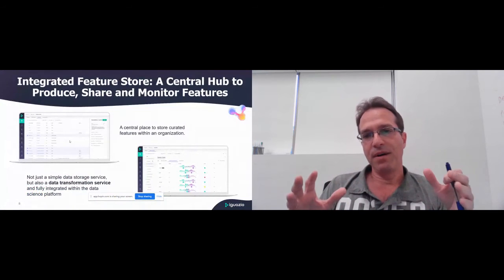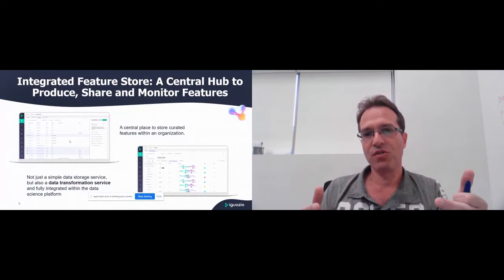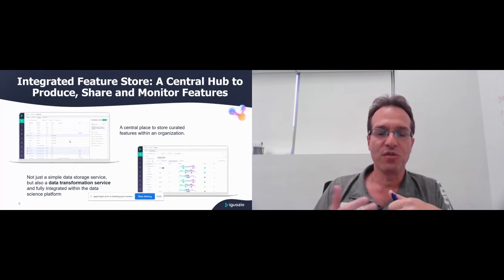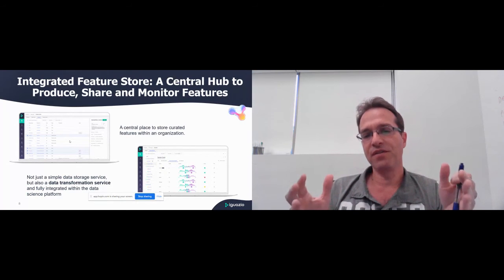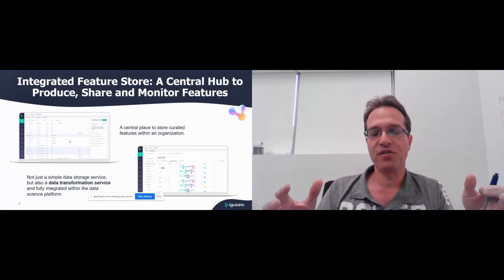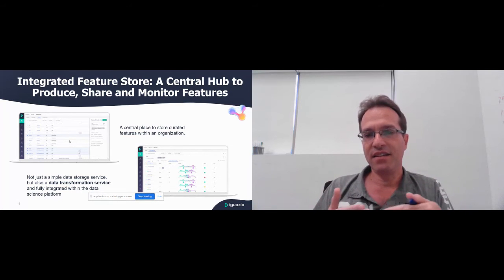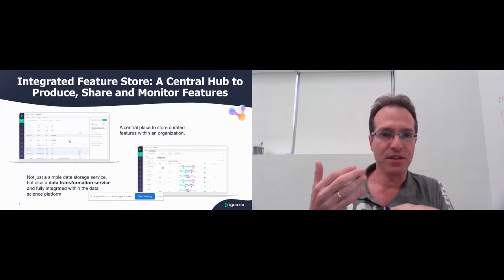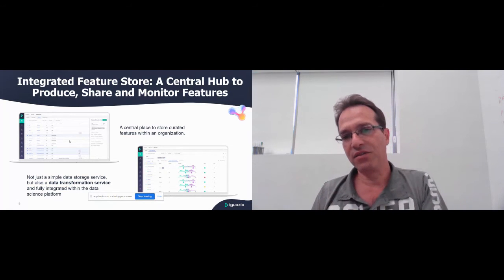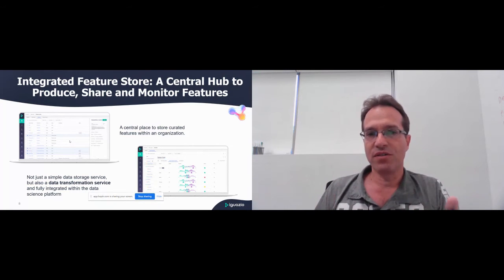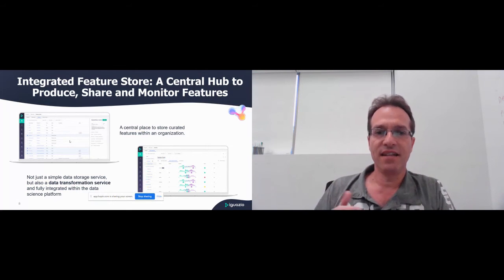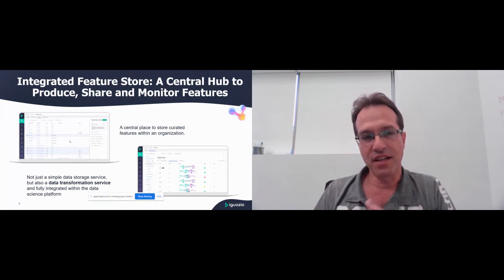At a high level, what feature store is all about: first and foremost it's a single pane of glass where you can view all your features. You have a catalog of features, you can share and reuse features, and easily keep metadata about them — which features are used most, which features are linked to specific models. As a data scientist you don't need to start from scratch — go to that catalog and easily identify features you can leverage.